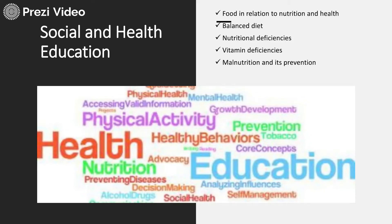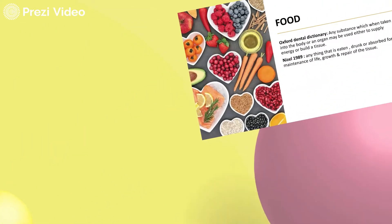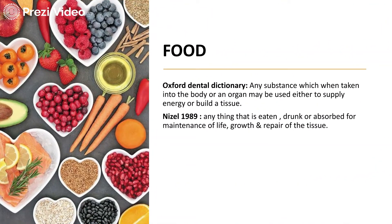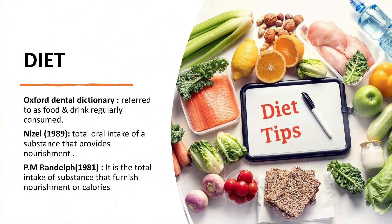First, let us try to understand the official definition of food. Any substance which, when taken into the body or any organ, may be used either to supply energy or build tissue. Simply stated, anything which provides you energy or helps in building up tissue can be referred to as food. As per NAS 1989, anything that is eaten, drunk, or absorbed for independence of life, growth, and repair of tissues is referred to as food.